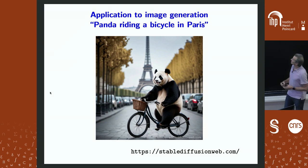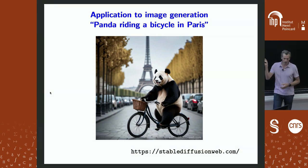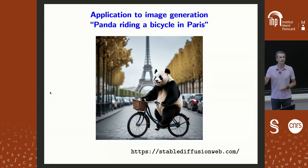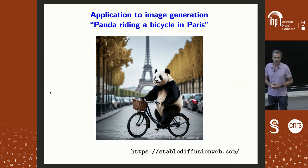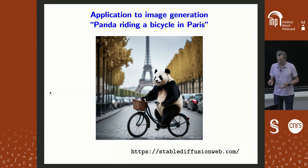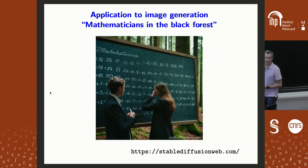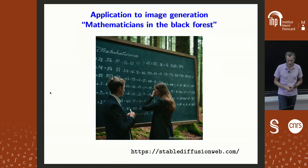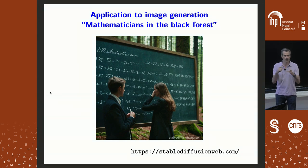Go on stablediffusionweb.com and give a prompt. Here's a panda riding a bicycle in Paris, and you see what you obtain — a large, high-resolution image, probably a million pixels, and very detailed. Since I was giving a similar talk at Oberwolfach, I asked for 'a mathematician in the Black Forest' and see what you obtain. I'm showing this because it's impressive in terms of results, and also to highlight the dimensionality — we are not generating digits, we are generating full images.